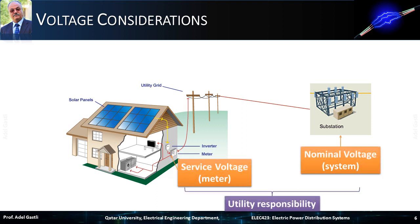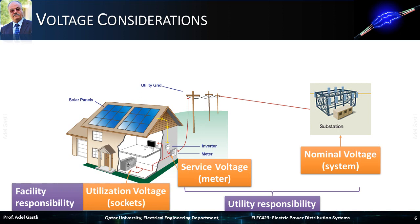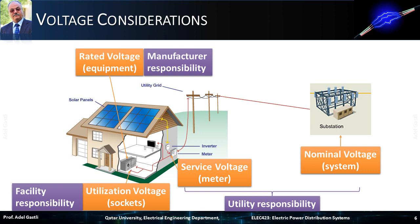This slide summarizes the voltage definitions and who is responsible for keeping them within their standard limits. For instance, the nominal and service voltages are under the responsibility of the utility, while the utilization voltage is under the facility responsibility. And the rated voltage of the equipment used is under the responsibility of the manufacturer of the equipment. All these voltages are defined and agreed on by different parties and stakeholders through mutually developed standards.